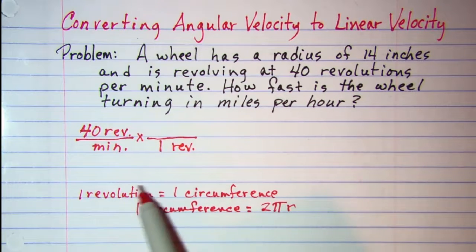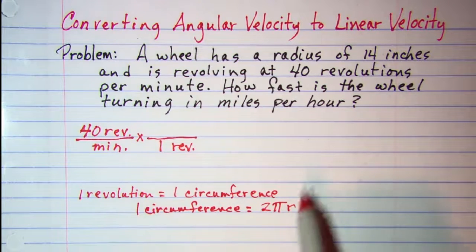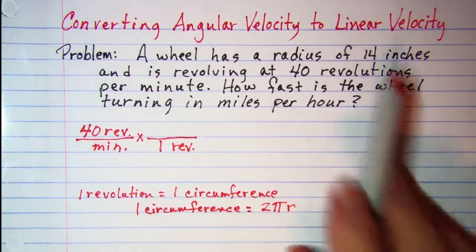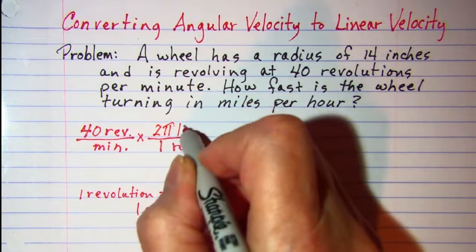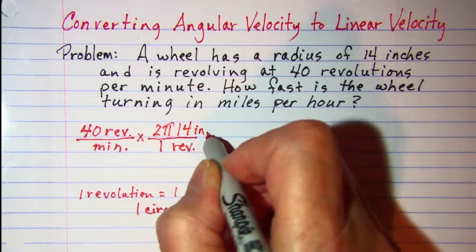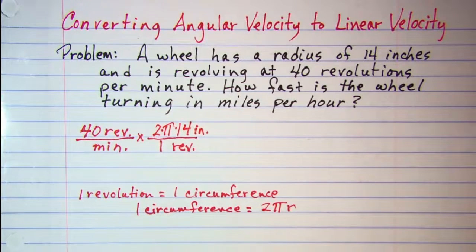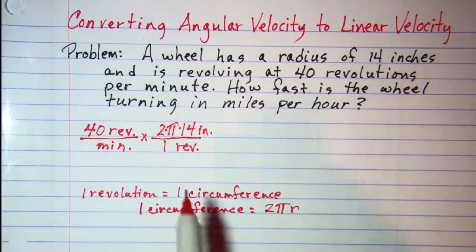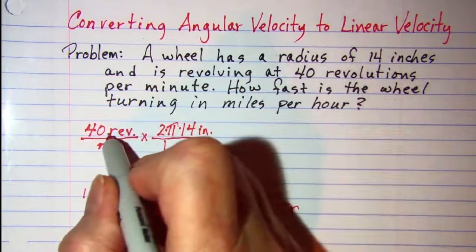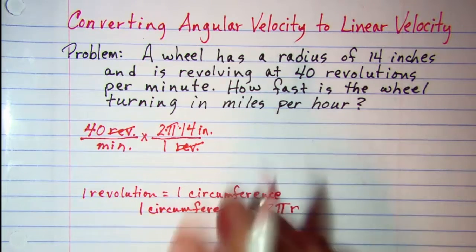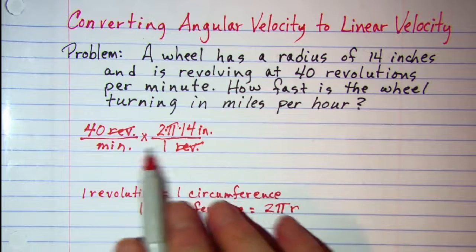And so one revolution is equal to 2π and then my radius was given as 14 inches. So one revolution is 2π times 14 inches and don't forget you have to have those units on there and this is all multiplied. So these are equivalent measures and I'm going to mark through the word revolution because that's now gone and my problem is now in inches per minute.